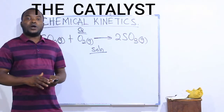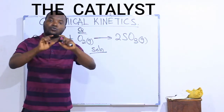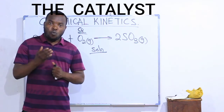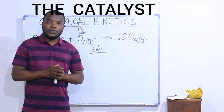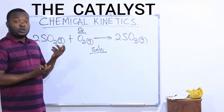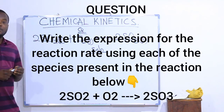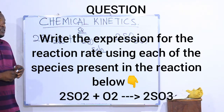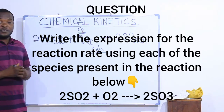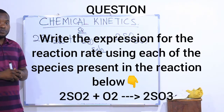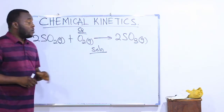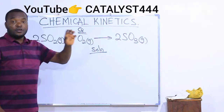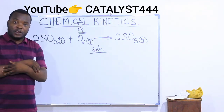In this video we are going to learn how to write an expression for the rate of a chemical reaction when the equation for the reaction is given to us. Let's take a look at this question that says: write the expression for the reaction rate using each of the species present in the reaction below. This is the equation given to us and we are asked to use it to write an expression for the rate of the reaction.